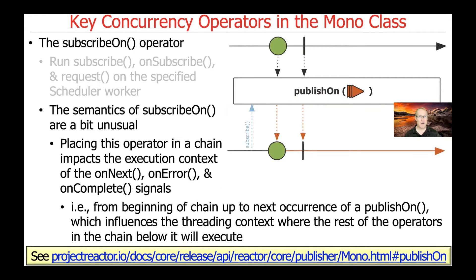There's also another thing that may vary the way in which the processing gets done. If from the point where subscribeOn is called up to before the end of the chain, a publishOn method occurs somewhere in that range, then that will cause the thread context from publishOn to run in perhaps a different context. So publishOn and subscribeOn are the two key methods used to control where threads execute in the context of Project Reactor Monos and Fluxes. For right now, subscribeOn will continue to the end of the chain unless there's a publishOn that occurs before the end.